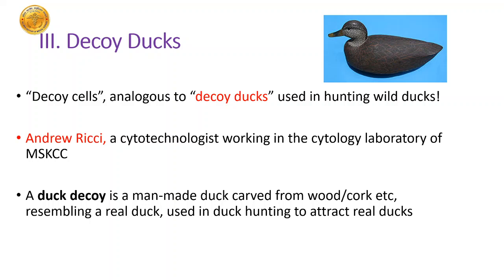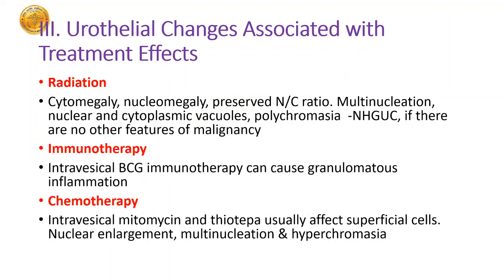Where did the name 'decoy' come from? There were decoy ducks used in the USA for hunting wild ducks — when ducks would see them floating they thought they were real ducks and would come and be captured. Andrew Ritchie, a cytotechnologist working at Memorial Sloan Kettering, gave them the name decoy cells. A duck decoy is a man-made duck carved from wood, cork, or plastic resembling a real duck, used to attract ducks in hunting.